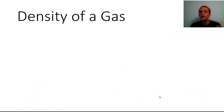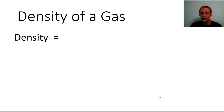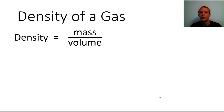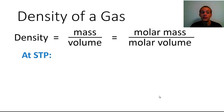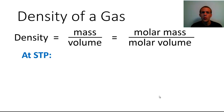Now we're going to talk about the second property the ideal gas law can determine: the density of a gas. Remember that density is mass per volume, or mass divided by volume. It turns out that the density of a gas is also equivalent to the molar mass of the gas divided by the molar volume. If we're at STP, we can use the molar volume we just determined — 22.4 liters per mole — to find density quite easily.